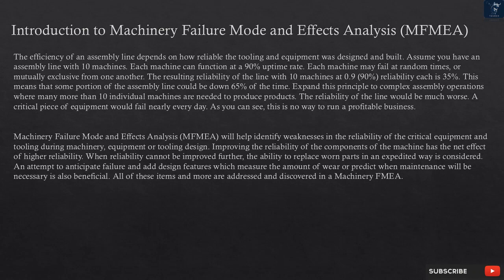Improving the reliability of the components of the machine has the net effect of higher reliability. When reliability cannot be improved further, the ability to replace worn parts in an expedited way is considered. An attempt to anticipate failure and add design features which measure the amount of wear or predict when maintenance will be necessary is also beneficial. All of these items and more are addressed and discovered in a Machinery FMEA.